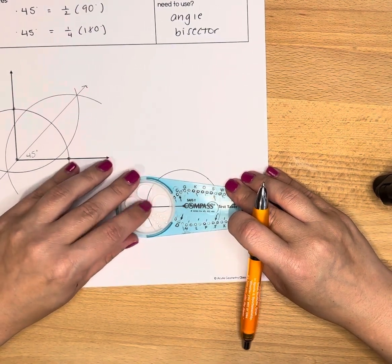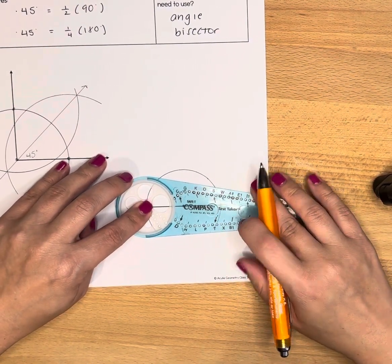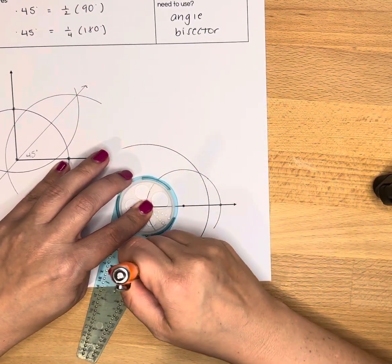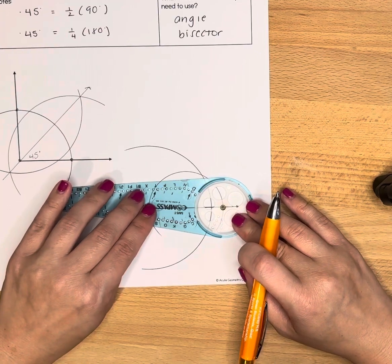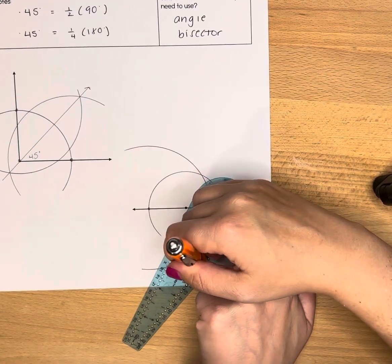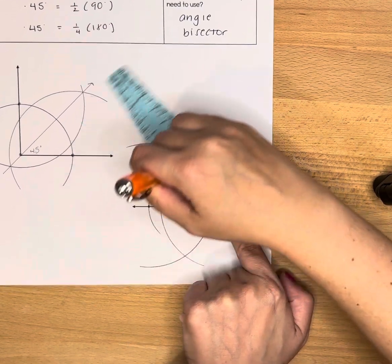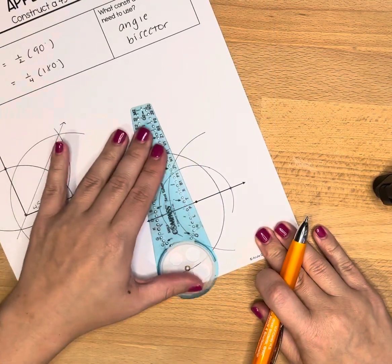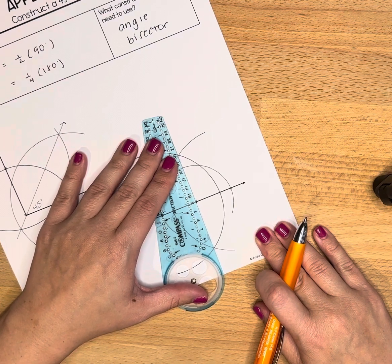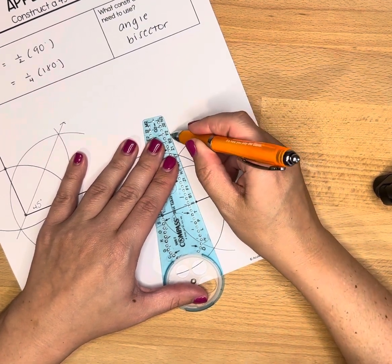Now I'm going to do the bisector part with the two arcs. Using my straight edge, I'm going to line up those intersections, and it should line up with my initial vertex too.